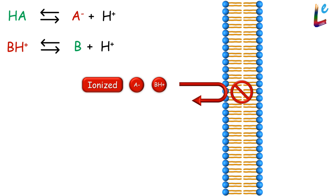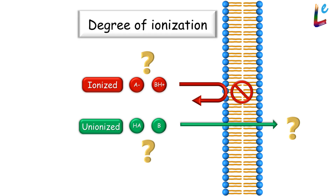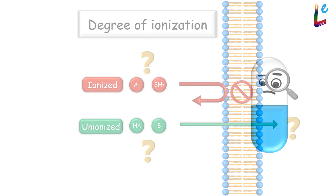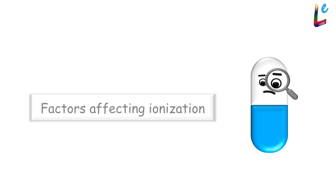If we have to know how much of the drug will cross the membrane, we have to calculate how much of it is ionized or unionized — that is the degree of ionization. So what we will do is first identify the factors that might affect the degree of ionization and bring those together into an equation.